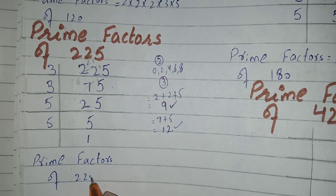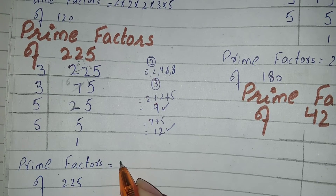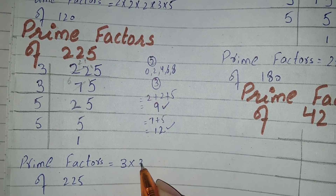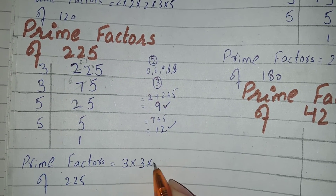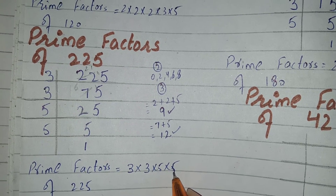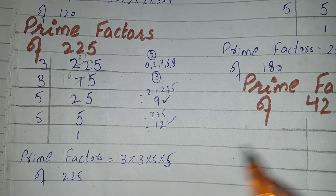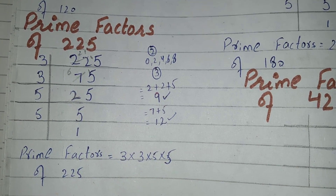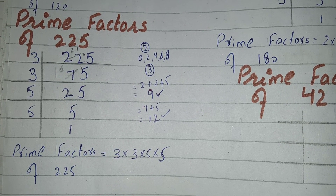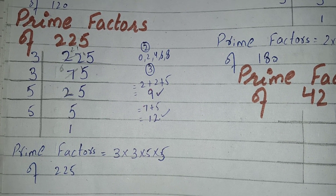Now we will write the prime factors of 225: equal to 3 multiply by 3 multiply by 5 multiply by 5. In this way we find the prime factors of a number. If you understood this video, don't forget to like this video and subscribe to this channel. Thank you, take care.